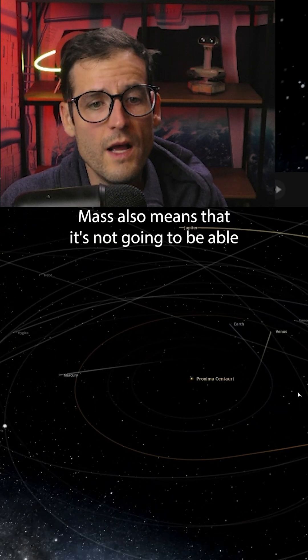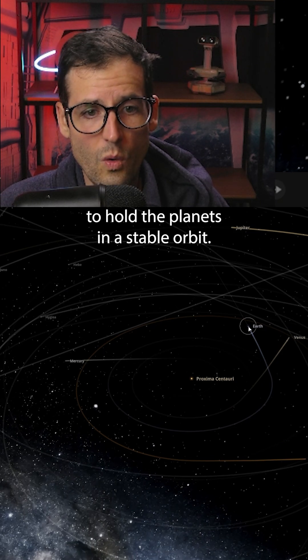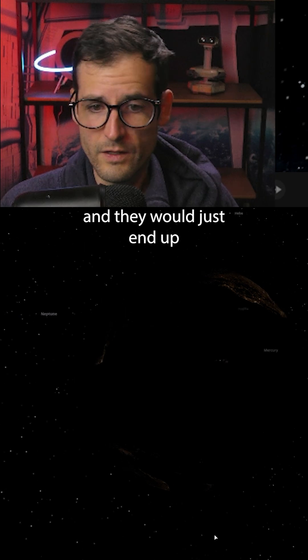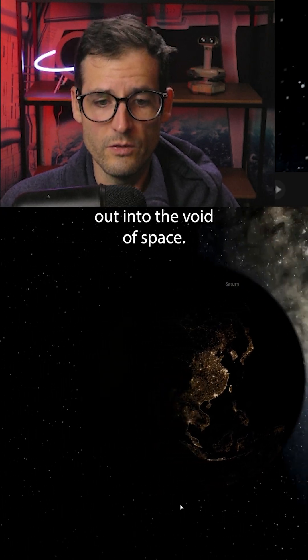Proxima Centauri's low mass also means it wouldn't be able to hold the planets in a stable orbit. Over time, the entire solar system would destabilize and would end up flinging all the planets out into the void of space.